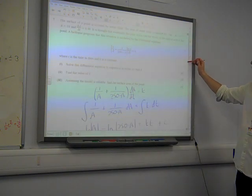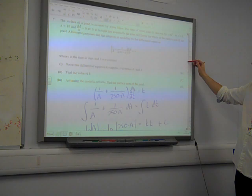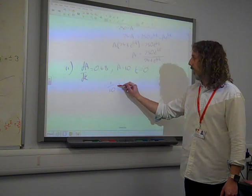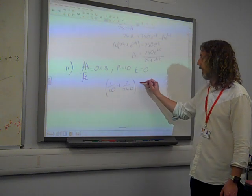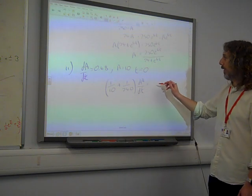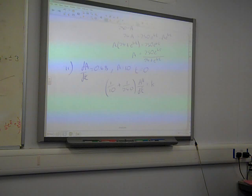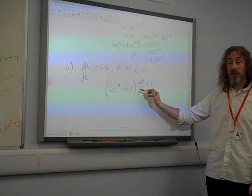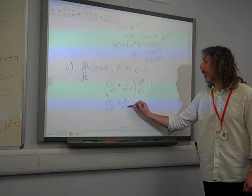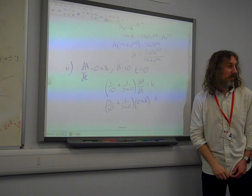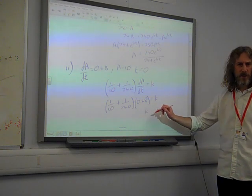That was given in the question there. So that is 1 over 10 plus 1 over 240 times 0.48. And if we now multiply both sides, that is 1 over 10 plus 1 over 240 times 0.48 is equal to k. And if you just stick that in your calculator, you get k is 0.02.